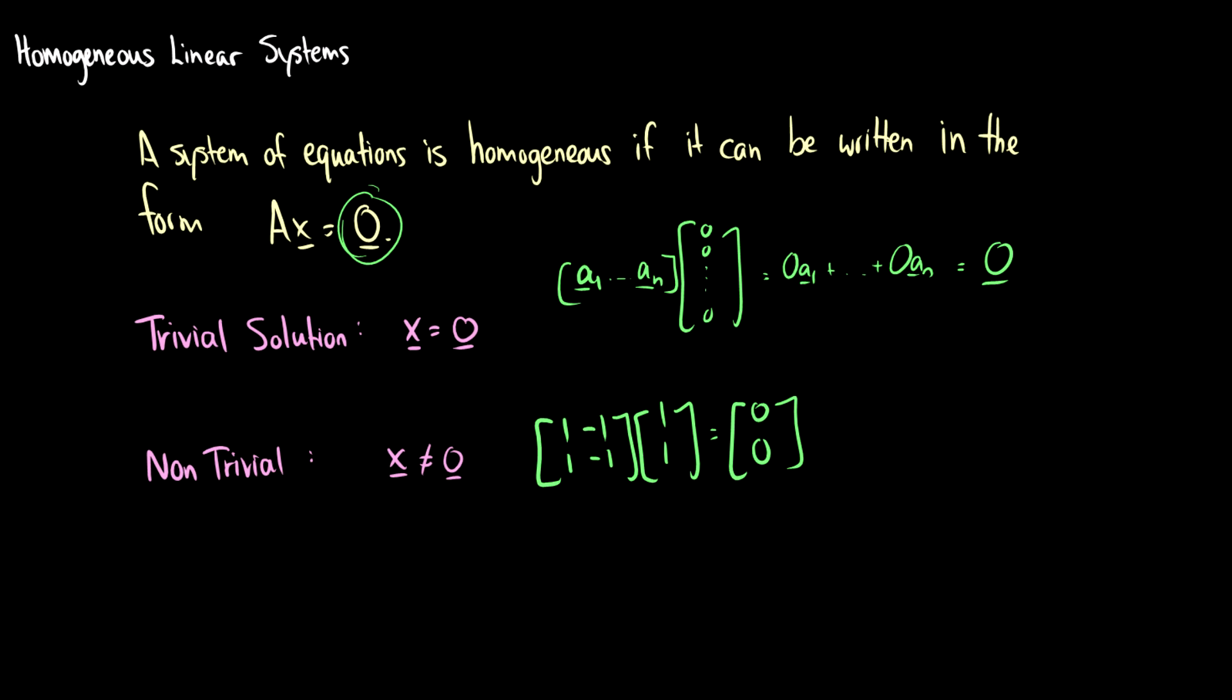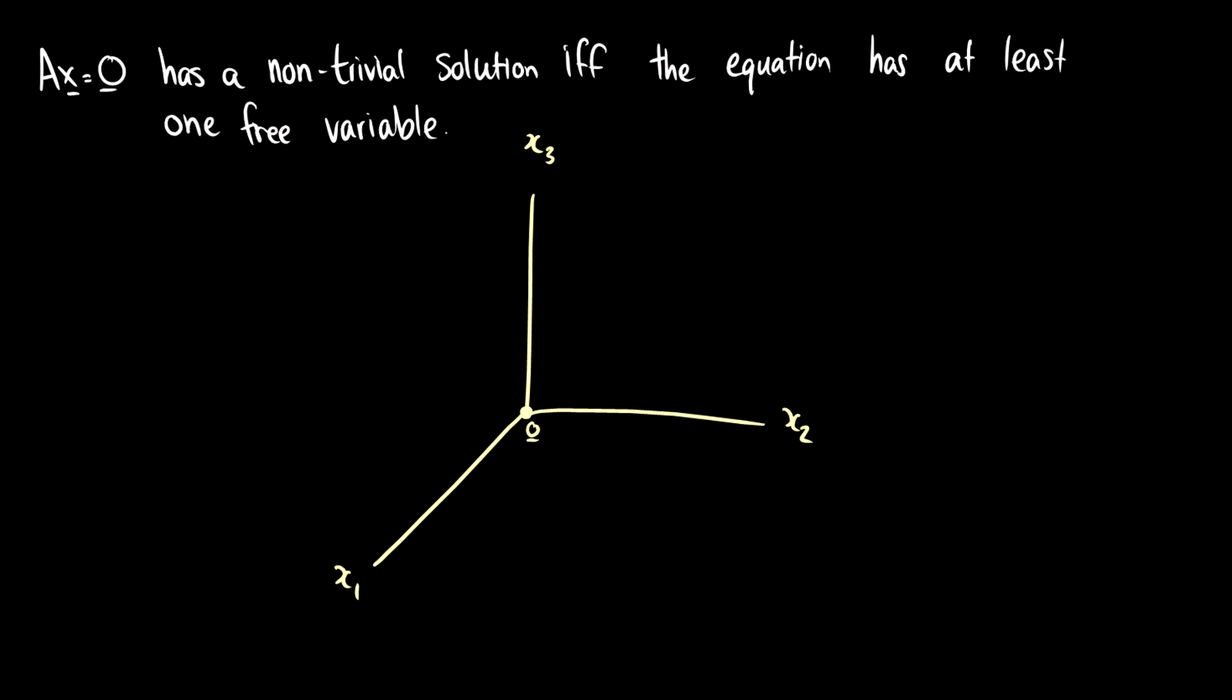So with that in mind, let's take a look at what this looks like. We say that Ax is equal to 0 has a non-trivial solution if the equation has at least one free variable.